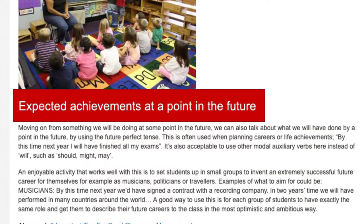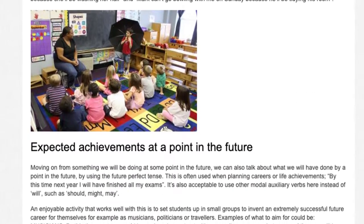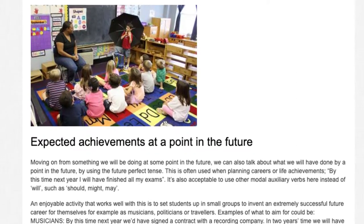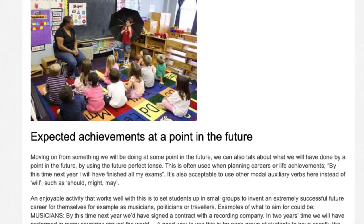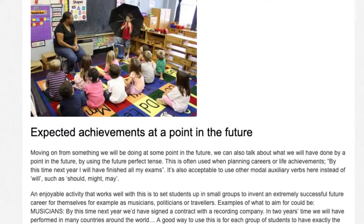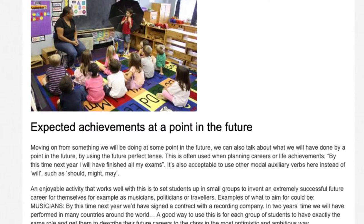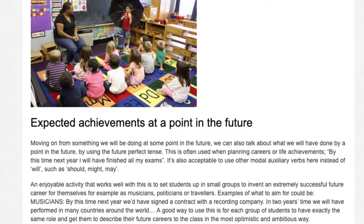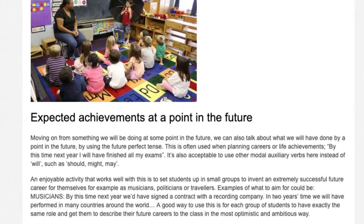Expected achievements at a point in the future. Moving on from something we will be doing at some point in the future, we can also talk about what we will have done by a point in the future by using the future perfect tense. This is often used when planning careers or life achievements, such as 'By this time next year I will have finished all my exams.' It's also acceptable to use other modal auxiliary verbs here instead of will, such as should, might, or may. An enjoyable activity that works well with this is to set students up in small groups to invent an extremely successful future career for themselves, for example as musicians, politicians, or travellers.